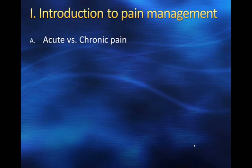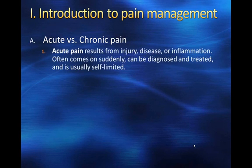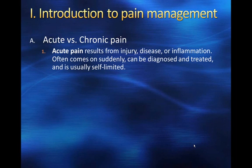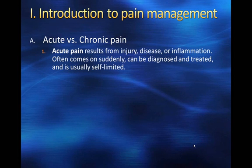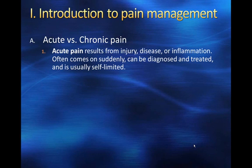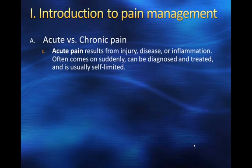Let's first talk about what we call acute versus chronic pain. Acute pain results from an injury, disease, or inflammation — often comes on suddenly, can be diagnosed and treated, and it's usually self-limited, meaning the person is going to get better. This is the primary use for narcotic pain relievers like Vicodin and Lortab. They're used to treat a specific injury and to keep the person from experiencing pain until the injury is healed — from a sports injury, car accident, burn, or post-surgical pain.